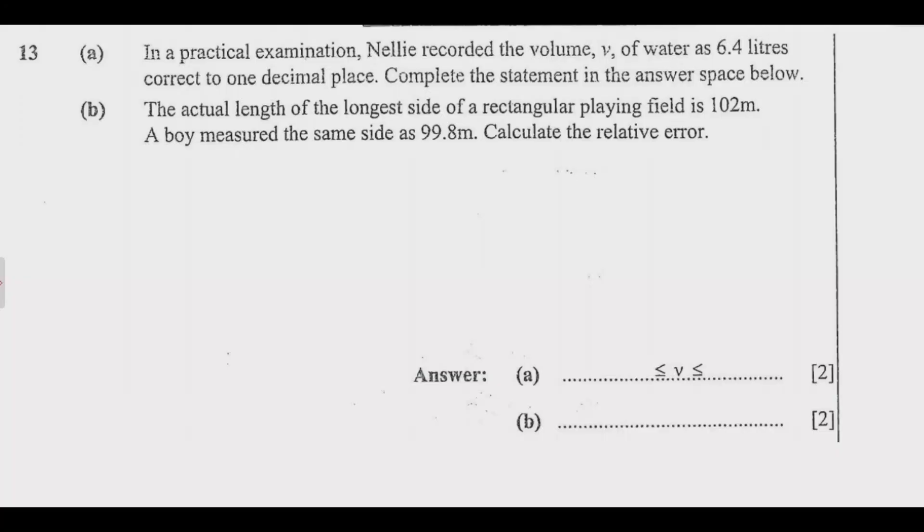Question 13a. In a practical examination, Nerian recorded the volume V of water as 6.4 liters, correct to 1 decimal place. Complete the statement in the answer space below. If you see, this one is trying to assess our understanding of decimal numbers and rounding off.